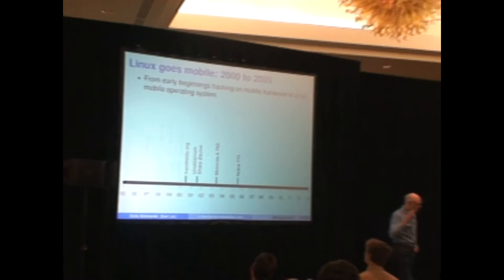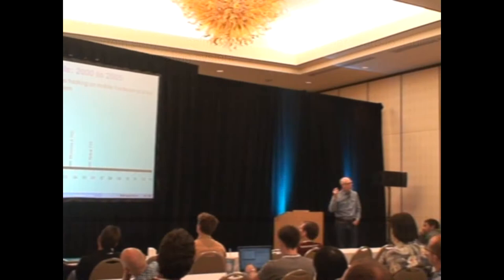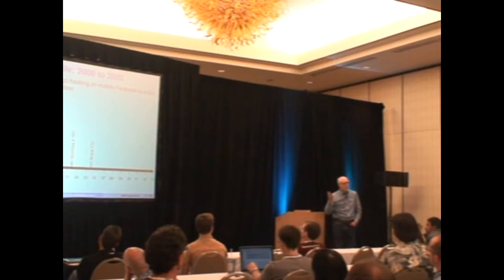The next phase of the story is mobile, which is an ongoing one. We've kind of covered one aspect of this already — the Palm Pilot in 1999, the Dragon Ball, UC Linux, UCLibC, and BuildRoot. That was really the first part of the story.